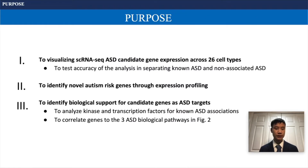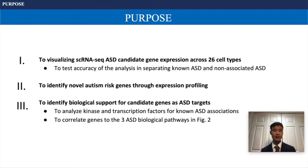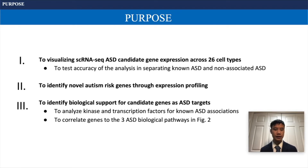My first purpose was to visualize single-cell RNA-seq autism candidate gene expression across 26 cell types, and to test the accuracy of the approach in separating known autism from non-associated genes. Next, I sought to identify novel autism-rich genes through expression profiling, and lastly, to identify biological support for the candidate genes using kinase and transcription factors for their past known autism correlations, and to correlate the genes back to the three biological processes shown in Figure 2.